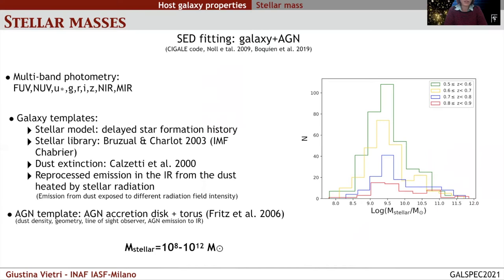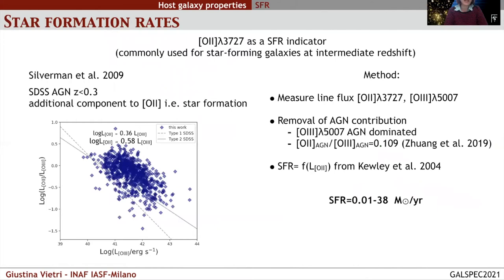We used the Calzetti law for dust extinction and a model of re-processed emission from dust. For the AGN template, we used the model of Fritz et al. 2006, which includes both accretion disc and torus components. We derived stellar masses in the range of 10^8 up to 10^12 solar masses. Here you can see the distribution of stellar masses in different redshift bins.